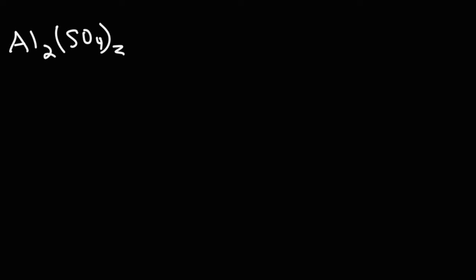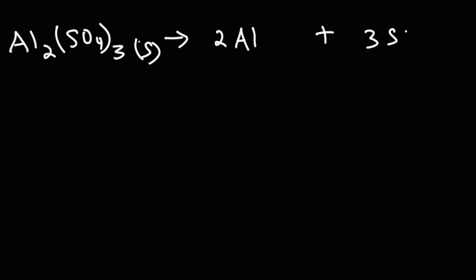Now try aluminum sulfate, Al₂(SO₄)₃. The subscript 2 means we have 2 aluminum cations, and the 3 means we have 3 sulfate ions. Aluminum is in group 3A of the periodic table, so it has a 3 plus charge. Sulfate is a polyatomic ion with a 2 minus charge. That's all we need for that one.